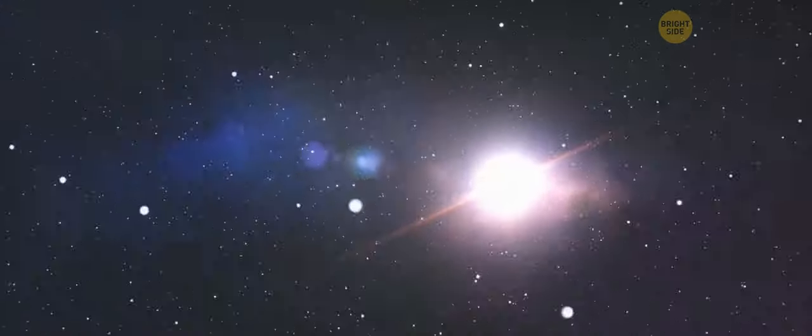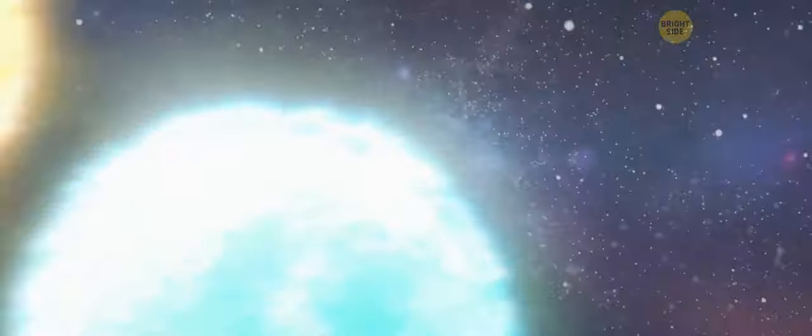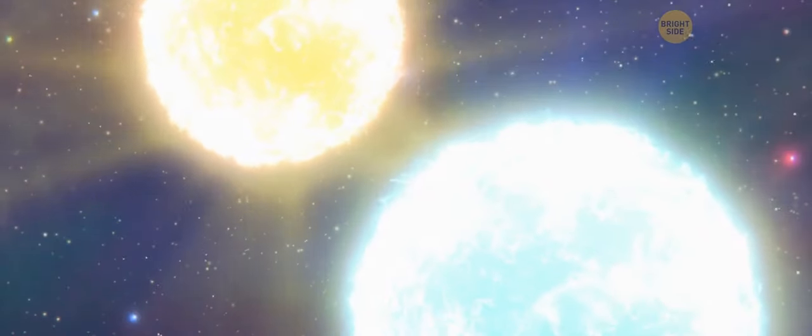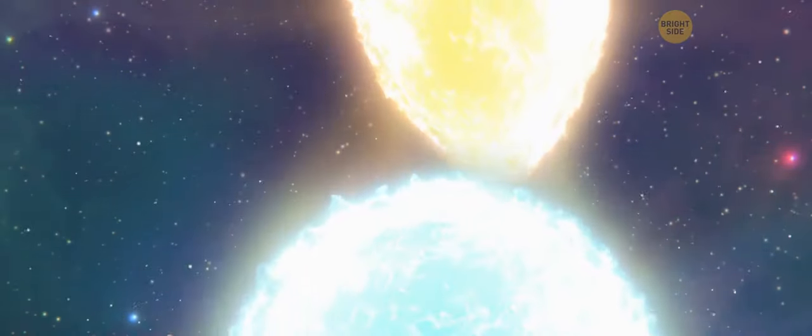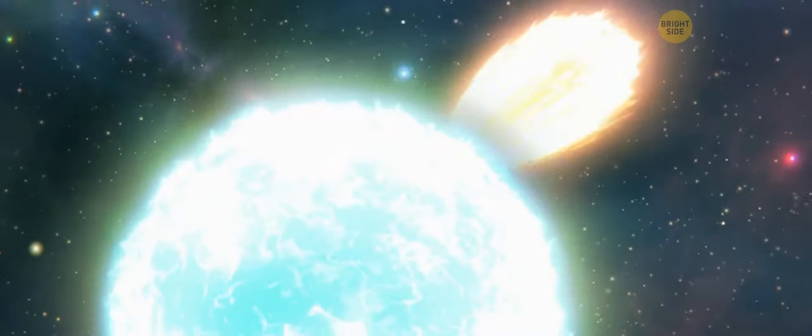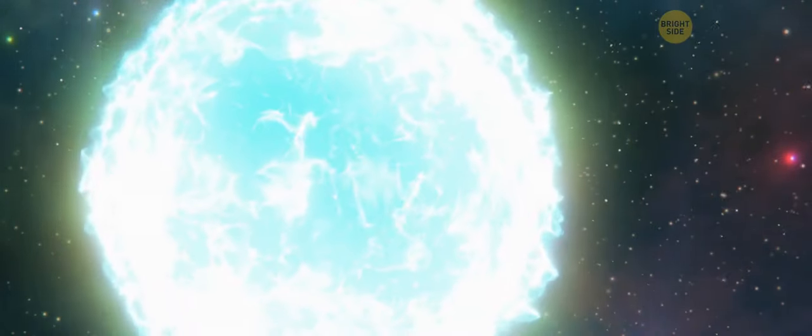The only problem is that this beauty may soon explode with enormous force. In binary systems, one star is always heavier than its companion. Sooner or later, it starts pulling matter away from the smaller star. Gradually, the bigger star just eats its neighbor.